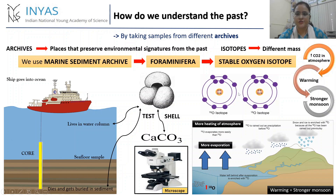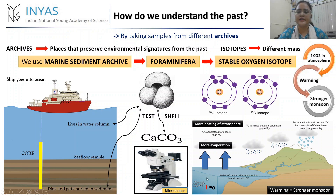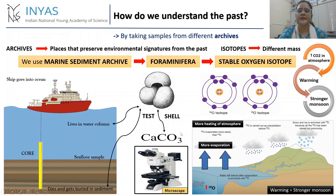Oxygen has a lighter isotope, 16O, and a heavier isotope, 18O, and their relative ratio varies depending upon different environmental factors. For example, when there is more heating of the atmosphere, there will be more evaporation, and it is easier for seawater to carry the lighter element into the clouds. Thus, with more heating, the water will be enriched in 18O, and when this organism makes its shell, it will have higher 18O values.